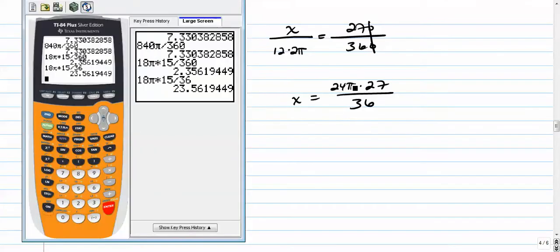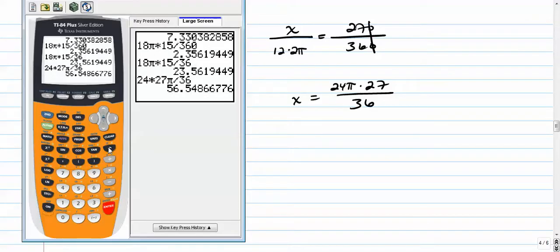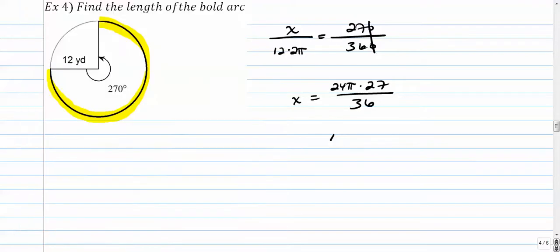24 times 27 times π divided by 36. Yeah, 56.549. That's yards.